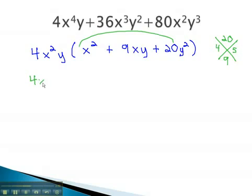Keeping the 4x²y, or the GCF, in front, we can then factor the remaining trinomial using those numbers. We can use x + 4 and x + 5.